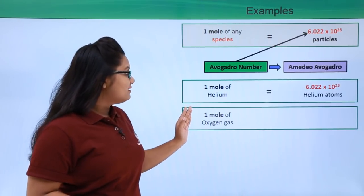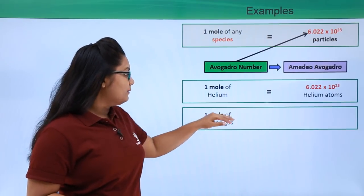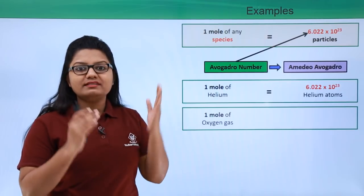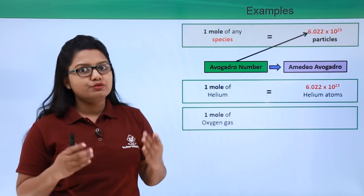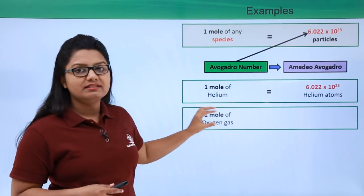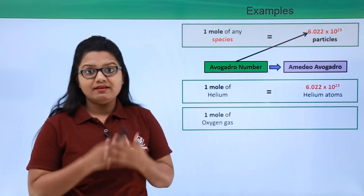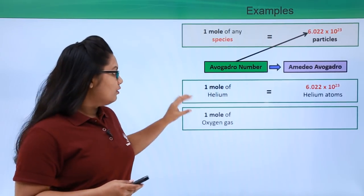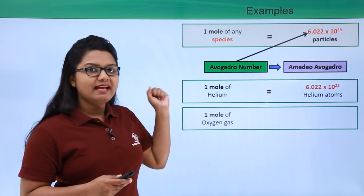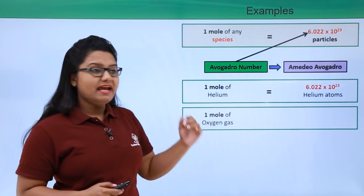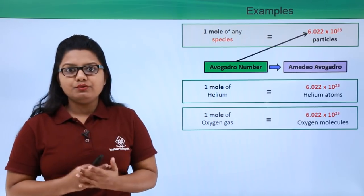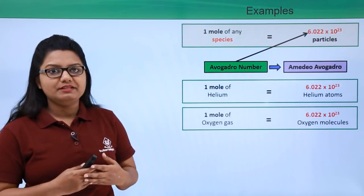Now suppose the species is one mole of oxygen gas. Oxygen as a gas has oxygen molecules, represented as O₂. So the species is oxygen gas and the particles are oxygen molecules. One mole of oxygen gas has Avogadro's number of oxygen molecules — that is, 6.022 × 10²³ oxygen molecules.